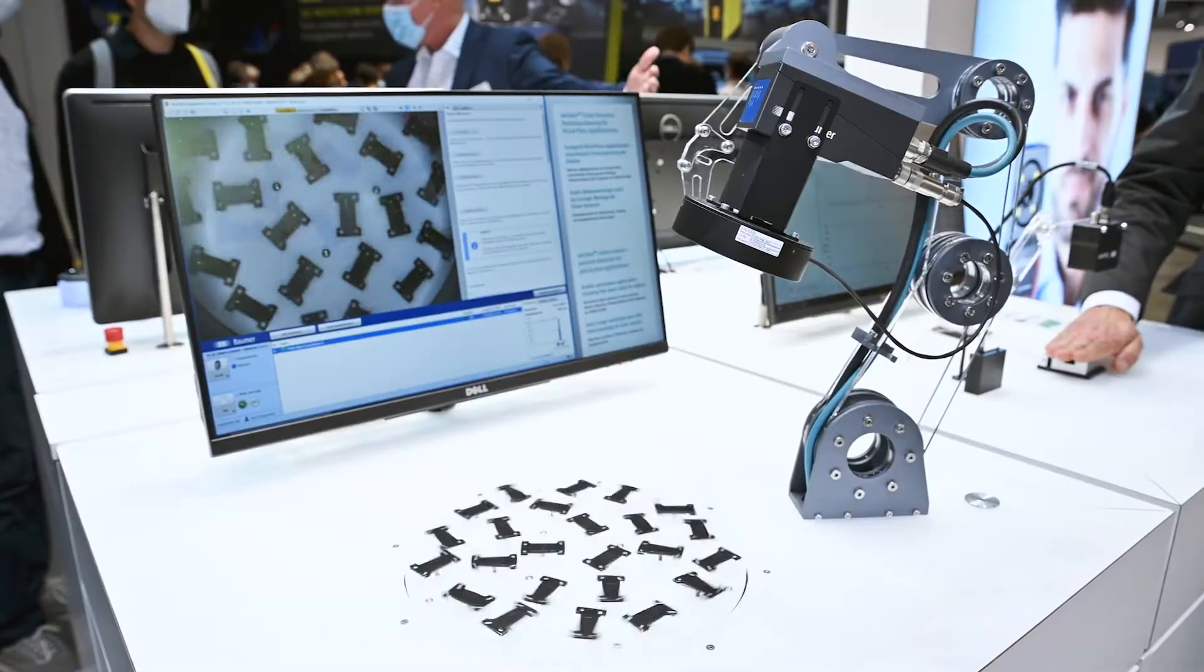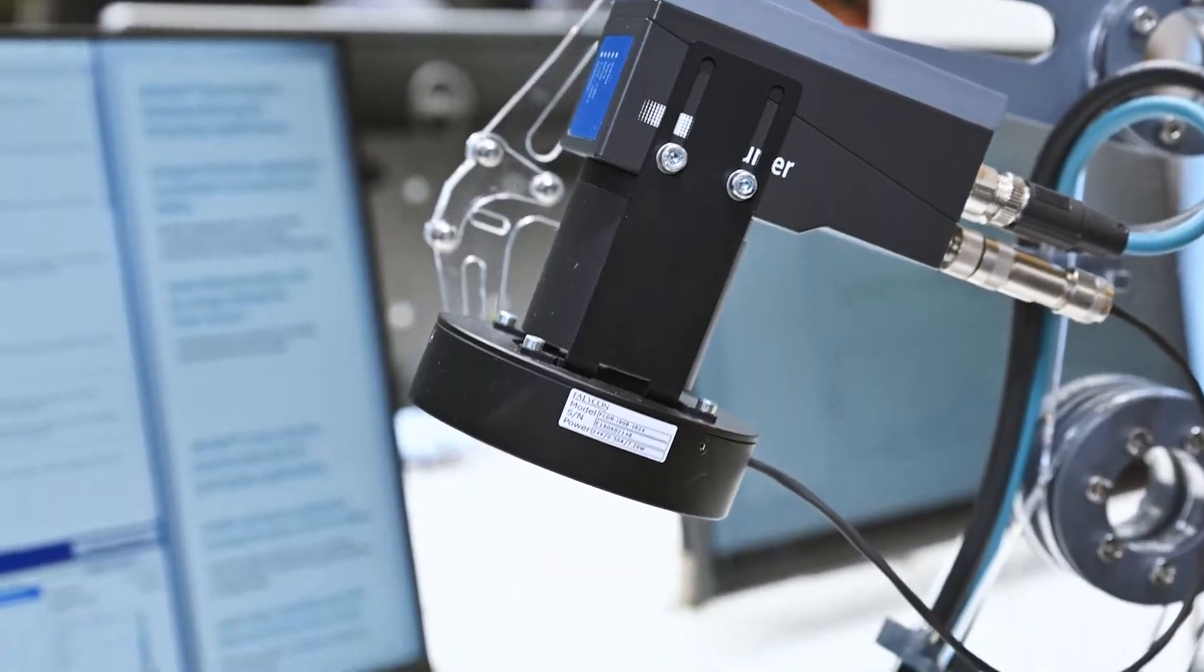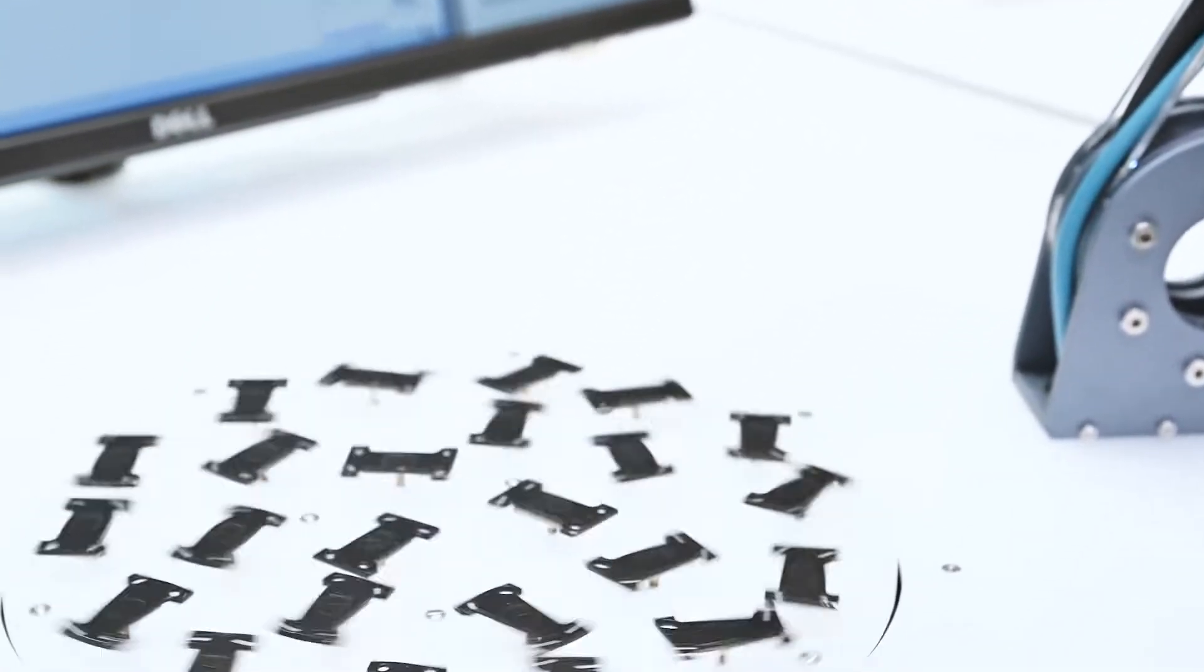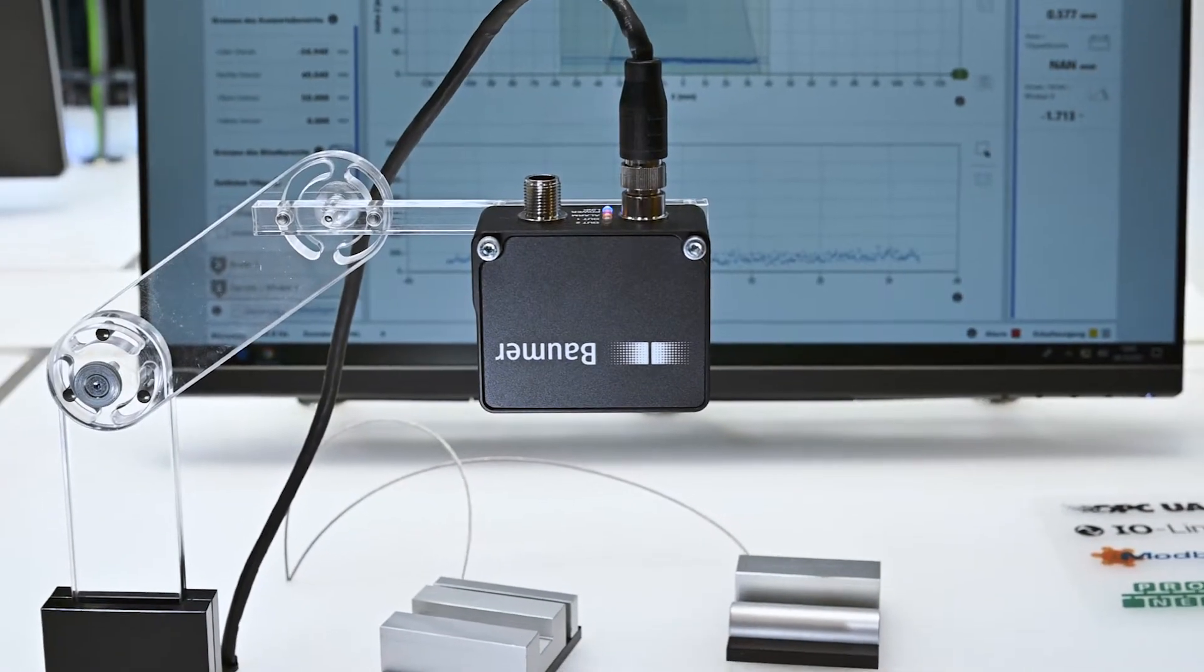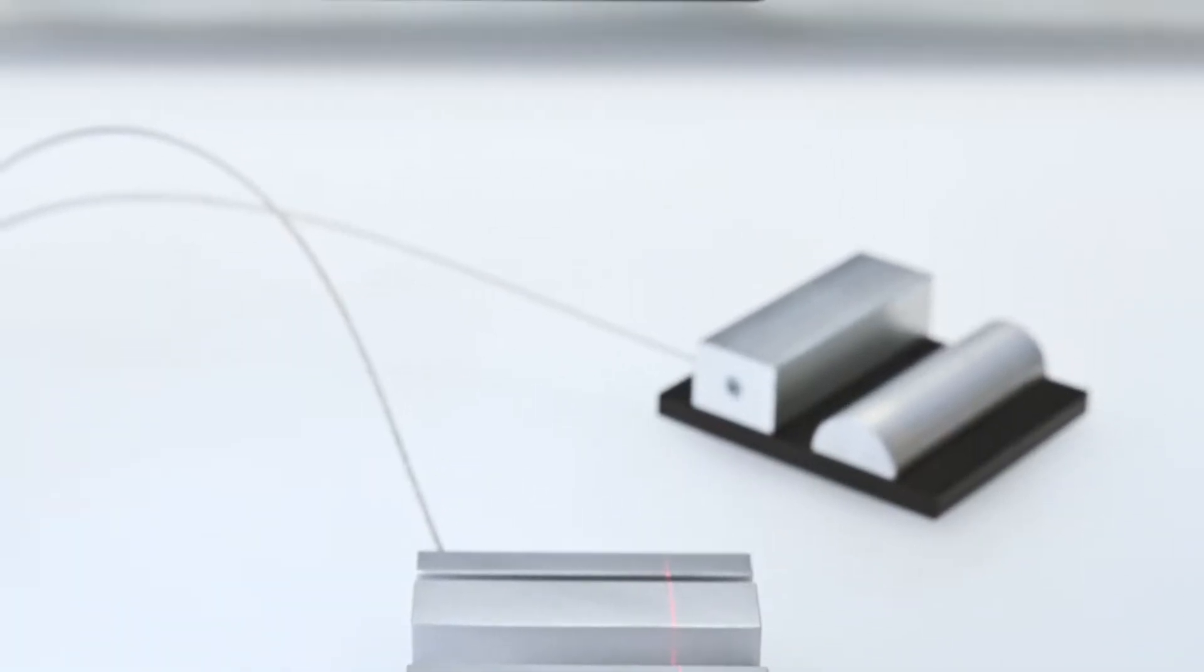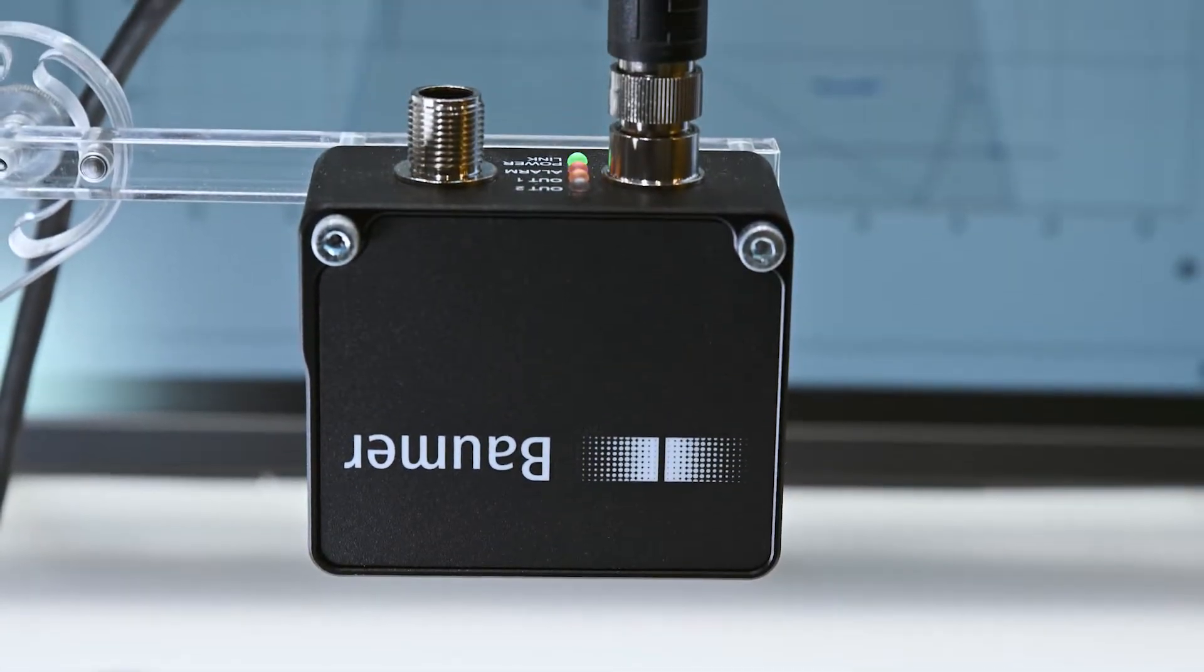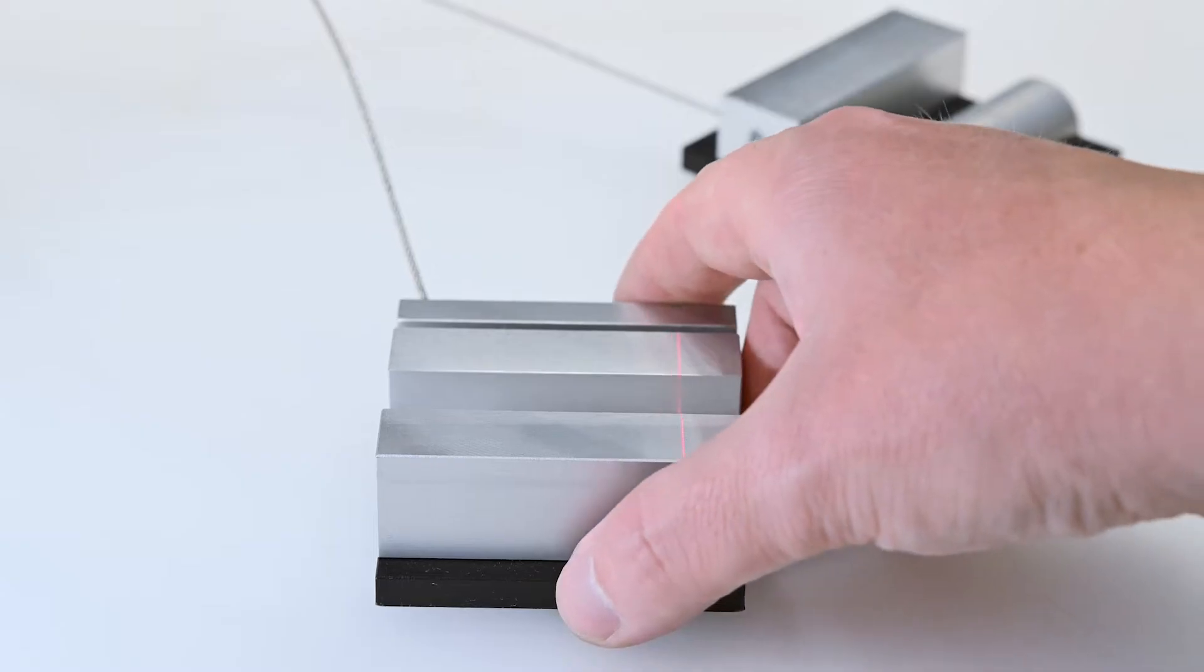The smart vision sensors enable efficient inspection and controlled tasks as well as fine positioning of robots. All functions are directly integrated in the compact housings. Together with the simple handling and implementation, this makes the smart vision sensors a smart solution.